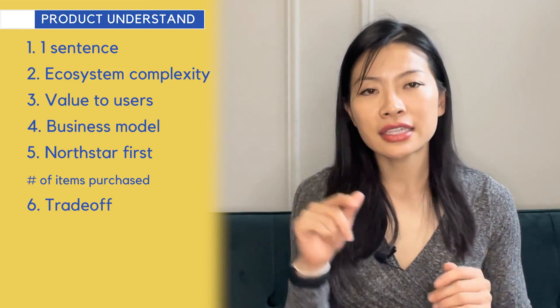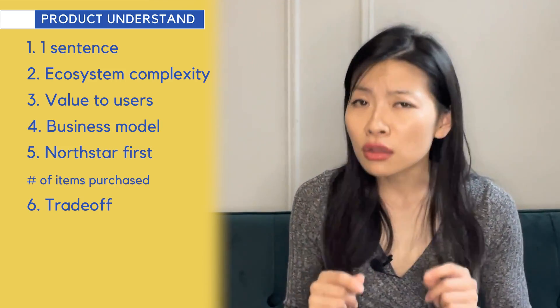Senior leaders call out trade-offs between metrics. I could have said my North Star was number of orders or transactions — which many people answering this question do. But I value number of items sold over number of orders. The difference: one order can contain five items, so counting just orders hides the actual volume flowing through the platform. Ten items in one order versus five orders with one item each — the former generates more revenue, helps businesses more, and signals that users prefer buying more volume on the platform.